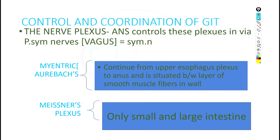Control and coordination is done by the nerve plexus, which is controlled by the ANS via parasympathetic nerves and sympathetic nerves. Parasympathetic means vagus nerves. There are two nerve plexuses: myenteric and Meissner's. It is continued from the upper oesophagus to the anus and is situated between the layers of smooth muscle fibers and walls. Meissner's plexus is present only in the small and large intestine.